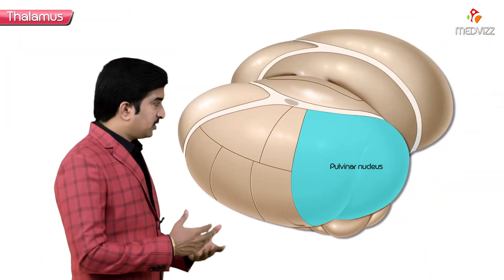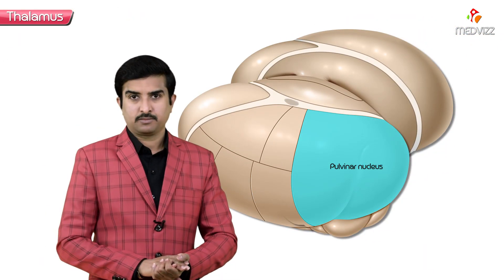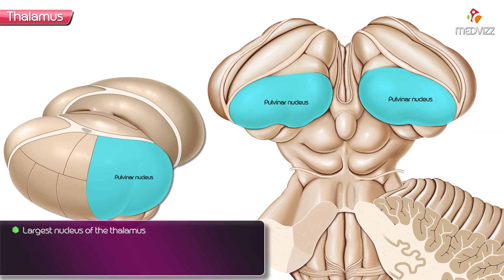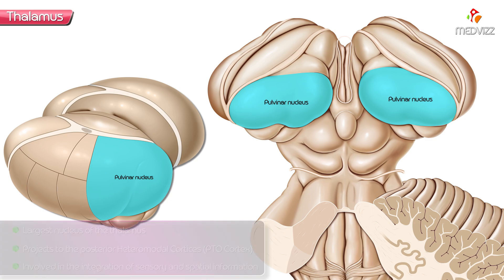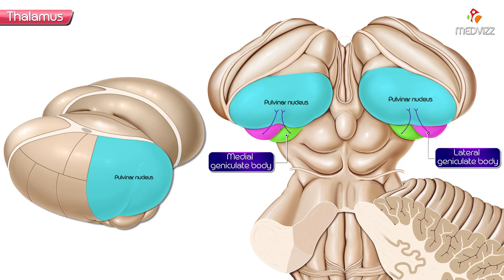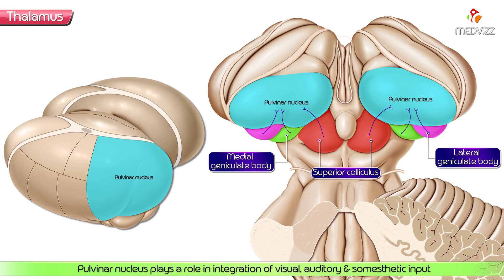Next is the pulvinar nucleus. The pulvinar nucleus is the largest nucleus of the thalamus. It projects to the posterior heteromodal cortices called the PTO cortex and is involved in the integration of sensory and spatial information. It mainly receives input from the lateral and medial geniculate bodies as well as the superior colliculus, playing a crucial role in integrating visual, auditory, and somatosensory inputs.